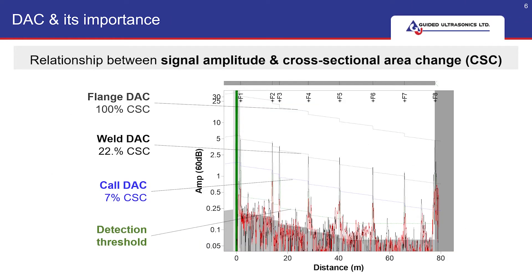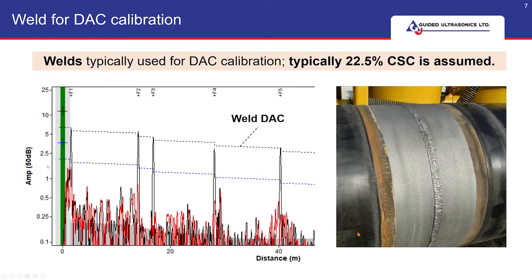Decks are not only important to account for the effects of reflection and damping, but they also provide a link between signal amplitude and the cross-sectional area change. So on the A-scan, the decks are represented by the dashed lines. By default, there are three main deck curves, which are the flange, weld, and call decks. Typically, pipe circumferential girth welds are used for weld deck calibration and are assumed to be 22.5% cross-sectional area change.